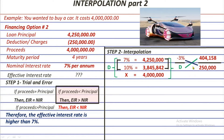Next, we cross-multiply. Negative 3 times 250,000 gives negative 750,000. Be careful with positive and negative signs. Then 404,158 times d gives 404,158d. We are doing this to find d, and then x, the effective rate. To isolate d, divide both sides by 404,158 — giving d equals negative 750,000 divided by 404,158.